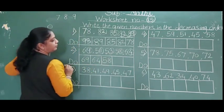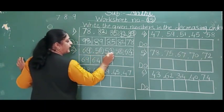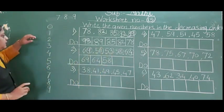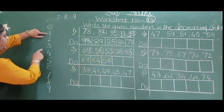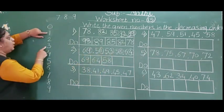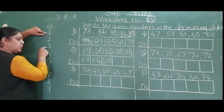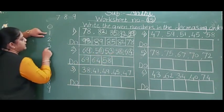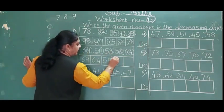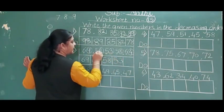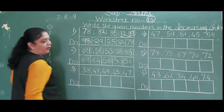Now two numbers remain: 51 and 53. Digits 1 and 3 — 1 is above and 3 is below. Below numbers are always big. So 3 is the big number, so 53 comes before 51. Then last is 51.